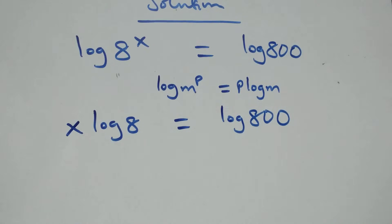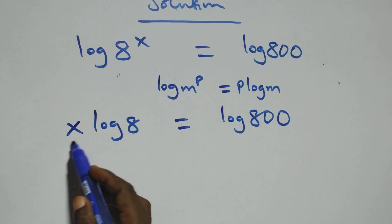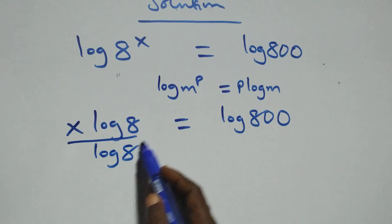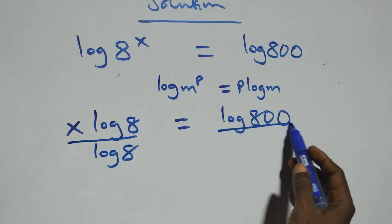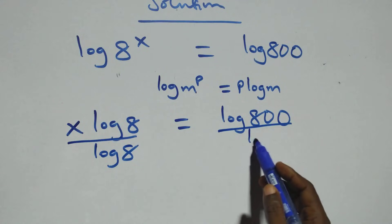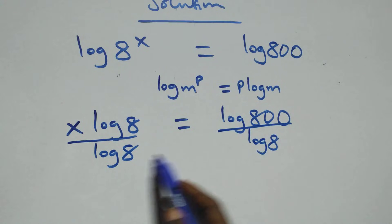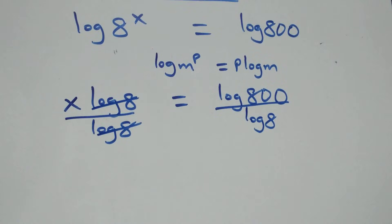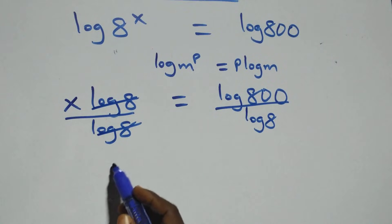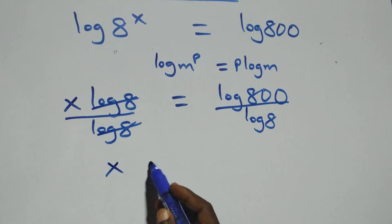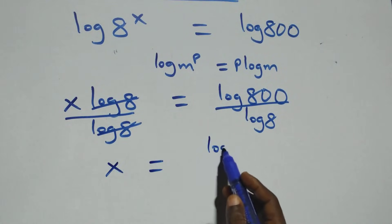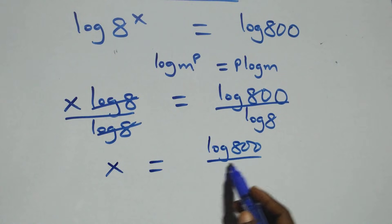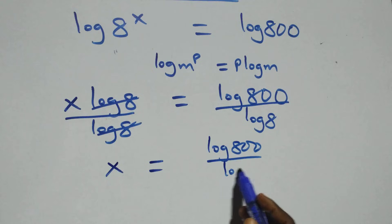The next step, we divide both sides by log 8 — divide this side by log 8 and also divide that side by log 8. The log 8 terms cancel each other, and we have x equals to log 800 over log 8.